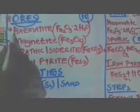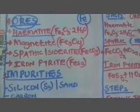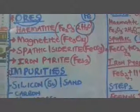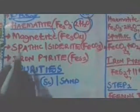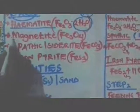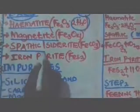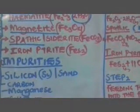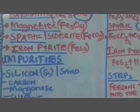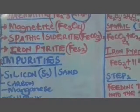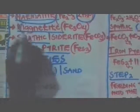For iron, we are going to consider these ores. The first ore is hematite, which is iron(III) oxide. Then we have magnetite, which is tri-iron tetra oxide. Then we have siderite, which is iron(II) carbonate. Then we have iron pyrite. However, we are going to focus more on hematite and magnetite.